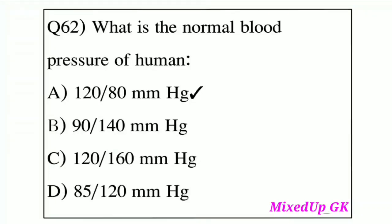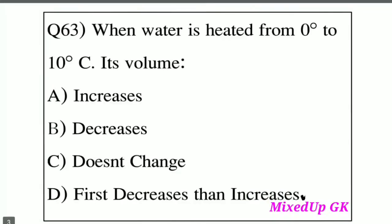Next question: What is the normal blood pressure of a human? Option A: 120 by 80 mmHg. Option B: 90 by 140. Option C: 120 by 160. Option D: 85 by 120. The normal blood pressure of a human is Option A, 120 by 80.